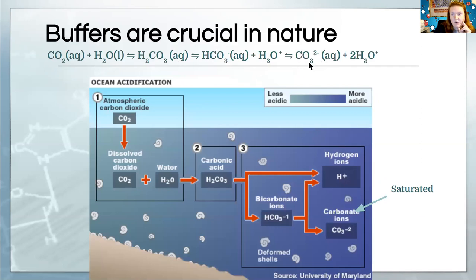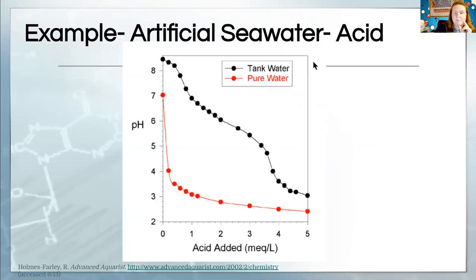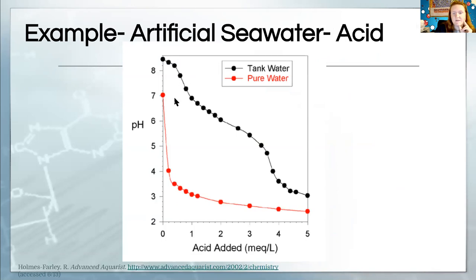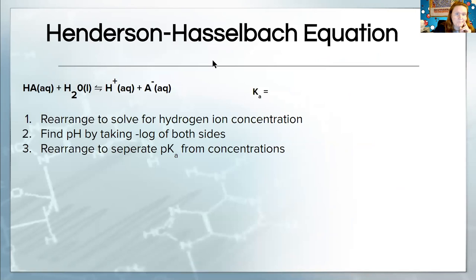So we are gonna do our own titration curve in lab. It will be starting out at a low pH and going up high, but this is a very useful thing to realize that buffers stop pH from changing so much.